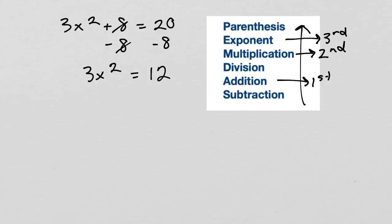Next, we have to get rid of the multiplication by 3. We do the opposite operation. We divide both sides by 3. The 3 will cancel out. 12 divided by 3 is 4. So, now we have x squared equals 4.